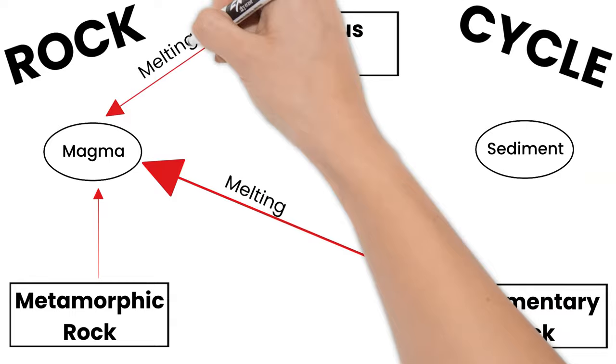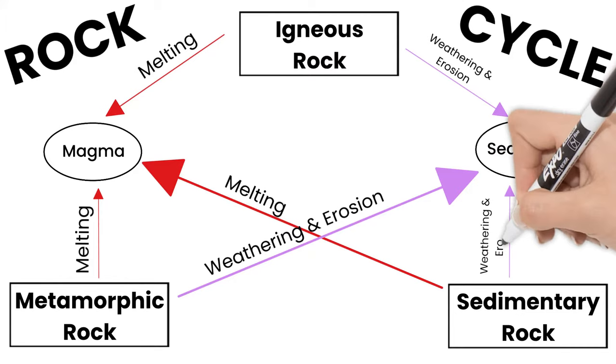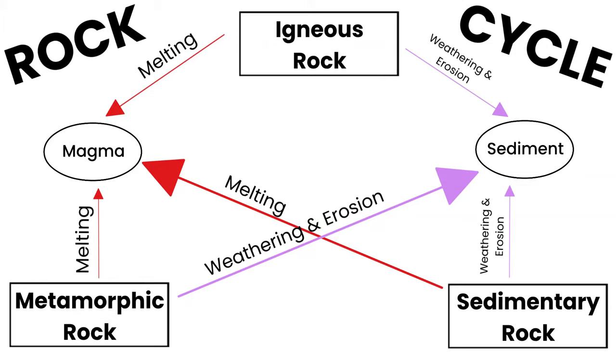All three rock types can also become sediments, which, remember, are tiny pieces of rock. Weathering and erosion is the process of rocks turning into sediments. Now we've shown how we get to magma or sediments from our rocks, but not how any of the rocks are formed.